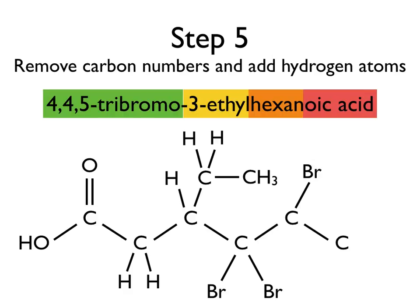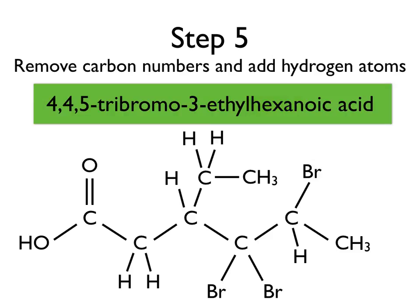Following our hexane chain, the next carbon has four bonds, so it's good. The fifth carbon only has three bonds, so we'll put one hydrogen on there. And the one terminating our chain only has one bond, so that also needs three hydrogens. And here we are — our finished product of 4,4,5-tribromo-3-ethylhexanoic acid. Voila!